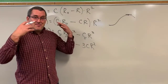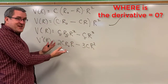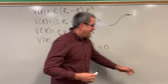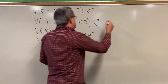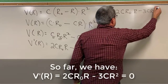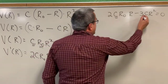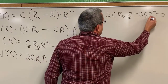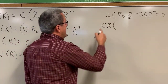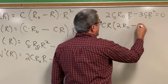To locate the maximum velocity, we want to know where the derivative is zero. We will now work algebraically to find out under what conditions this derivative equals zero. We have 2CR sub zero R minus 3CR squared equals zero. What you might notice is there's a common factor of C and a common factor of R. So let's factor out CR. If we factor out CR, what remains in the first term is 2R sub zero, and what remains in the second term is minus 3R.